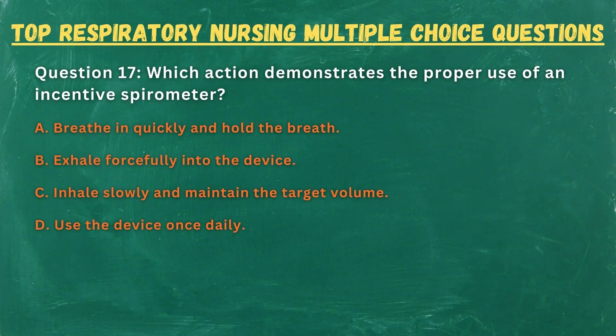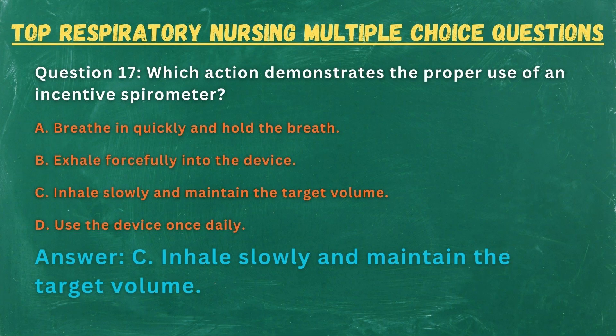Question 17. Which action demonstrates the proper use of an incentive spirometer? A. Breathe in quickly and hold the breath. B. Exhale forcefully into the device. C. Inhale slowly and maintain the target volume. D. Use the device once daily. Answer: C. Inhale slowly and maintain the target volume.